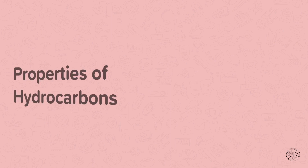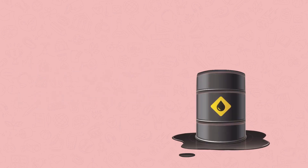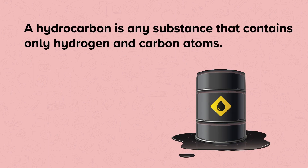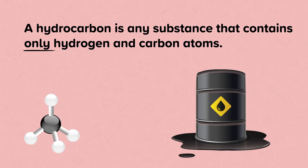In this nugget we are going to learn about the properties of hydrocarbons. Most of the compounds in crude oil are hydrocarbons. A hydrocarbon is any substance that contains only hydrogen and carbon atoms. When representing hydrocarbons using ball and stick models, carbon atoms are black, hydrogen atoms are white and the bonds within the molecules are represented by sticks.